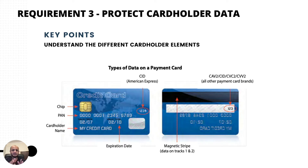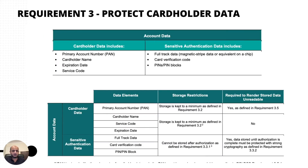When you're storing, showing, or printing this data it has to be protected. The problem is that people unknowingly end up storing and not protecting this data. PCI divides data into two elements: cardholder data — the PAN, cardholder name, expiration date, and service code, which you can store but must protect — and sensitive authentication data (SAD), which includes track 2 data, the CVV code, and the PIN block. Do not store SAD after the transaction is authorized.